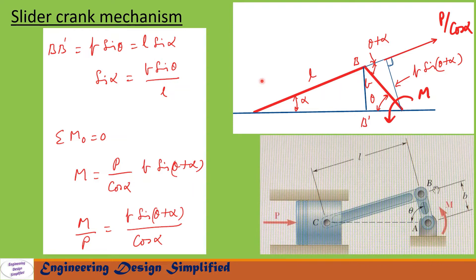From this triangle we can find BB′. Since the crank length is b and the angle is theta, this vertical height is b·sinθ. Similarly, since the coupler length is l and the angle is alpha, this height also equals l·sinα. Therefore, BB′ = b·sinθ = l·sinα, and from this we can write sinα = b·sinθ / l.